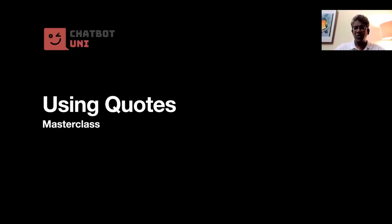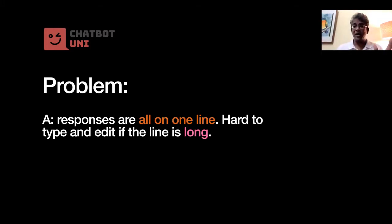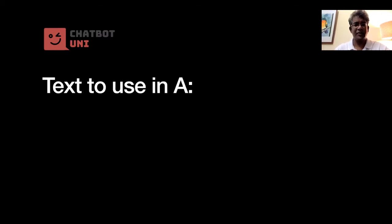Today we'll be talking about quotes and persistent storage. Quotes are a solution to a very interesting problem: the A's text must all be in one line, and when it becomes too long it becomes very hard to type or edit. The solution is to use quotes, which allow you to do three things: write multi-line text, create special characters, and make text templates, which we'll discuss shortly.